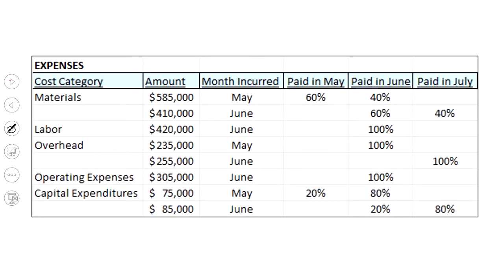Then we have our outflows, our expenses. The way we did it here is we've broken it up into multiple categories and the month incurred. For example, we have materials. We bought some in May, $585,000 in May and $410,000 in June. And then we see the pattern.